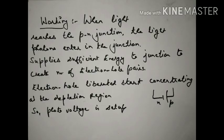When light reaches the p-n junction, the light photons enter the junction. The photons are packets of energy that supply sufficient energy to the junction to create a number of electron-hole pairs. In the n-type, free electrons are created; in the p-type, holes are created. The electrons and holes move towards the depletion region, creating a voltage barrier. This voltage barrier is called photo voltage — similar to the potential barrier in a conventional p-n junction.